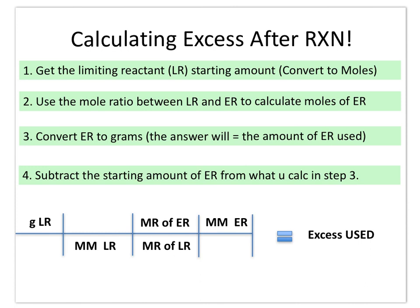Much like many of the other calculations that you've done, the limiting reactant is still going to be the determining factor for the calculation of excess reactant remaining after the reaction. So the first thing we're going to do is take our limiting reactant and convert it into moles using our molar mass. We're then going to use the mole ratio between our limiting reactant and our excess reactant to calculate the moles of excess reactant.